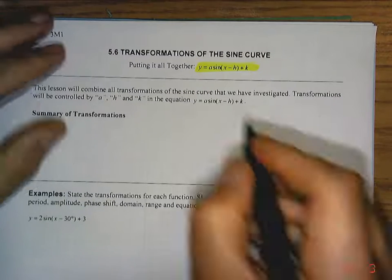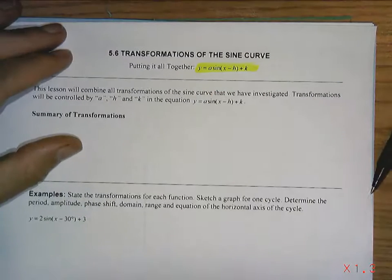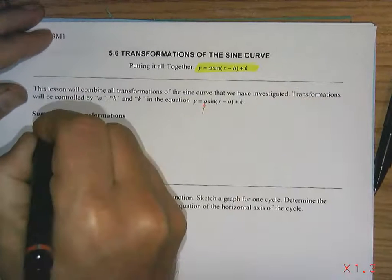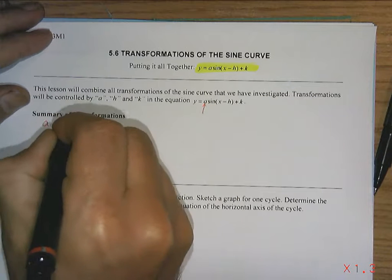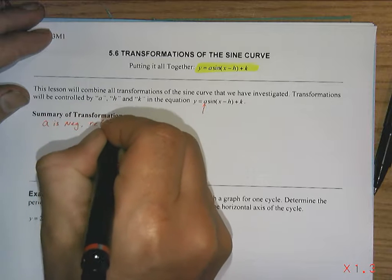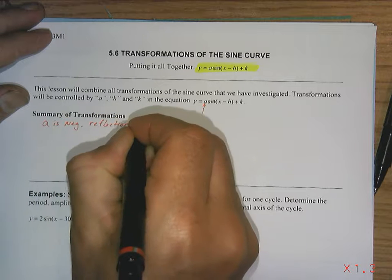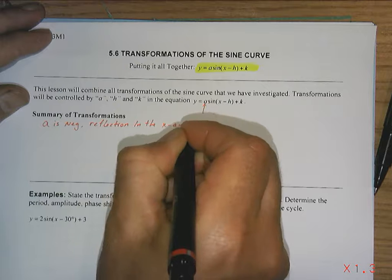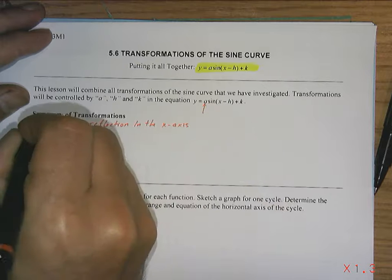So let's first talk about the a value. What does this a value do? Let's remember. Well, if a is negative, then what you have is a reflection in the x-axis. So if a is negative, we're going to get a reflection in the x-axis.